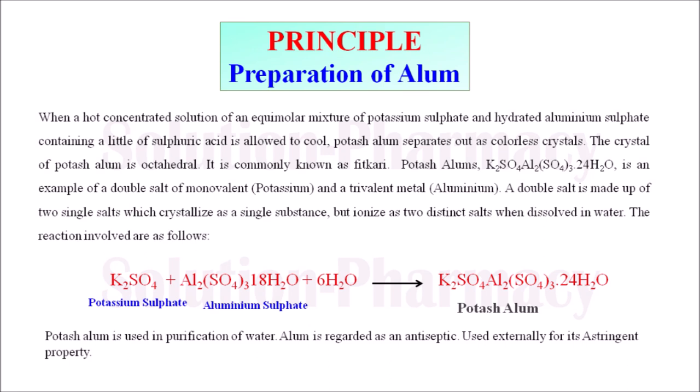When this hot concentrated solution of an equimolar mixture of potassium sulfate and hydrated aluminum sulfate, containing a little sulfuric acid, is allowed to cool, potash alum separates out as colorless crystals.